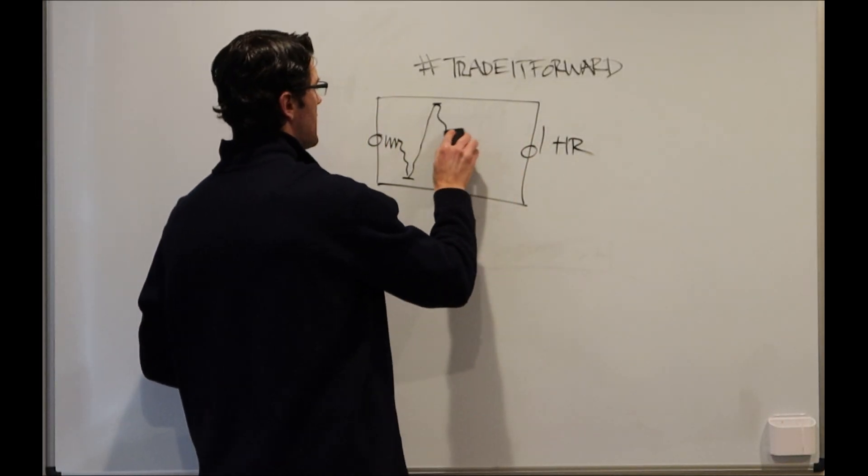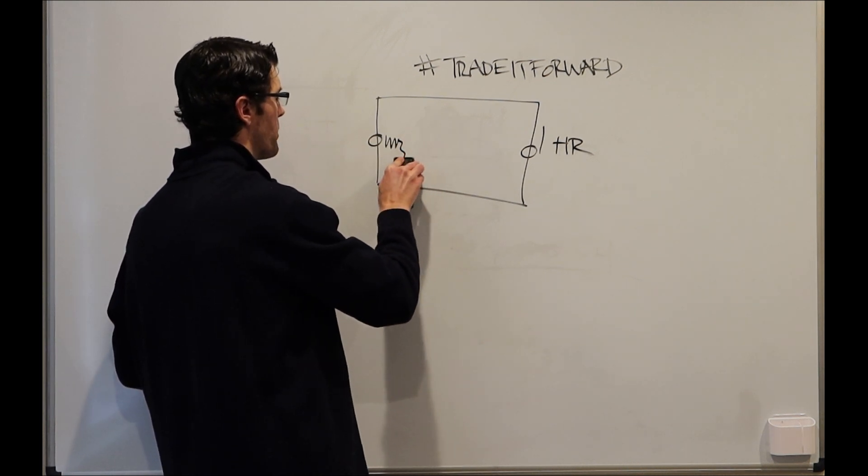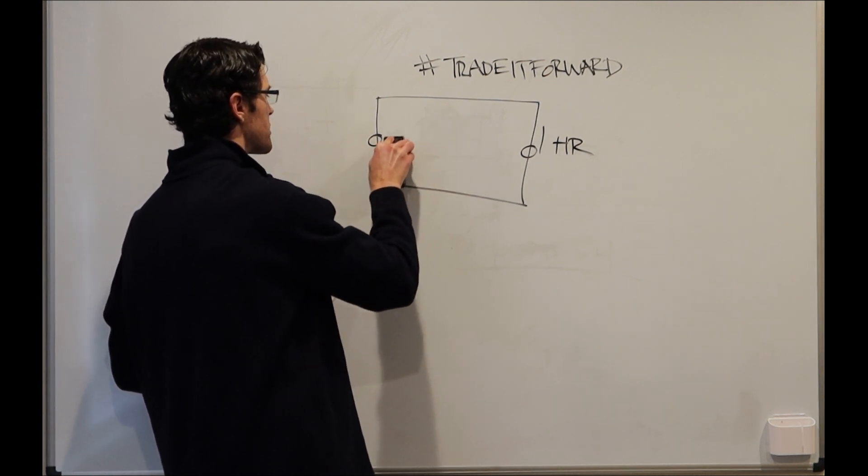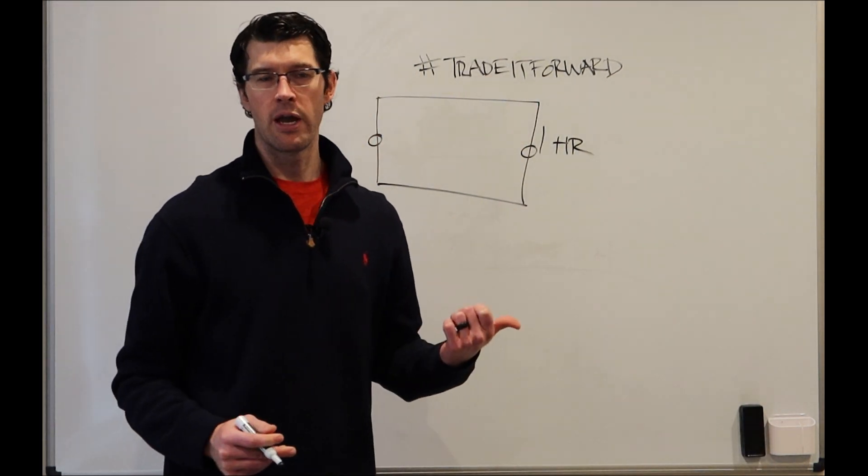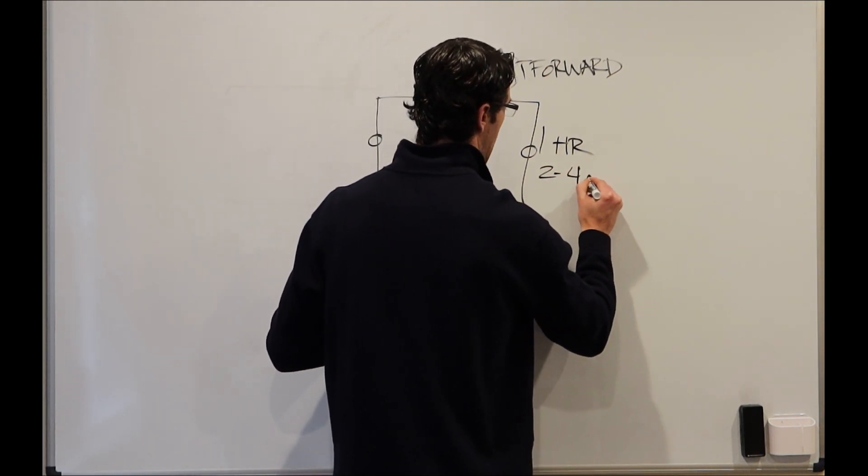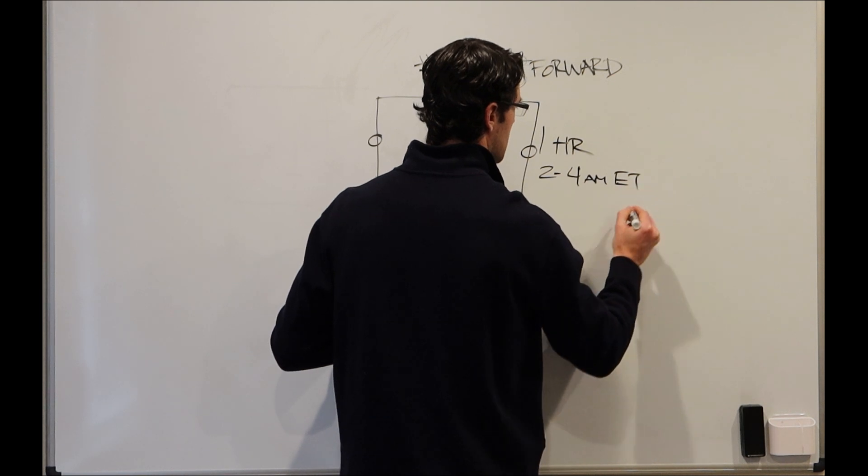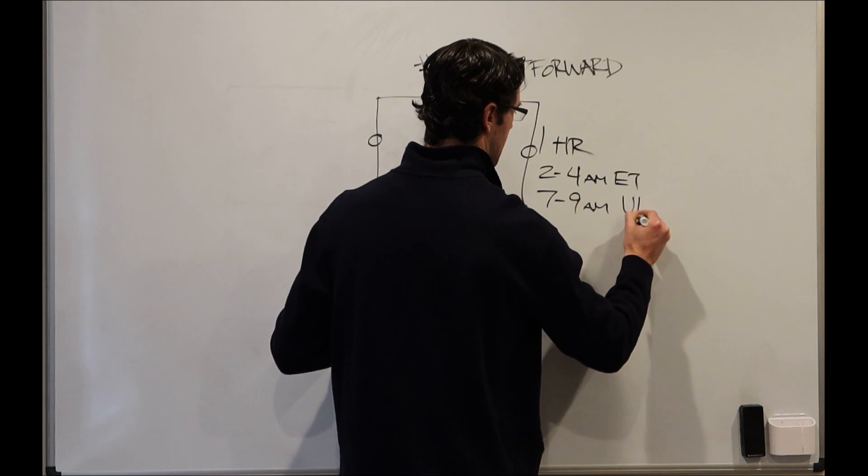What I'm focused on is as we come into the London session, as we come into the Frankfurt Open, I like to look at euro pairs and pound pairs between 2 a.m. and 3 a.m. and 4 a.m. So if that's my window, let's just say between 2 and 4 a.m., and this is Eastern time, so this would be roughly 7 to 9 a.m. UK time.